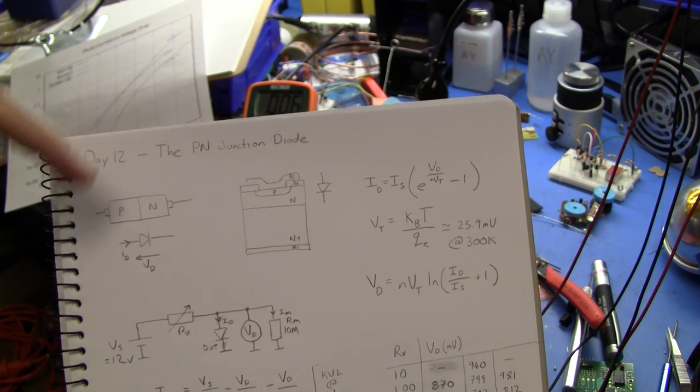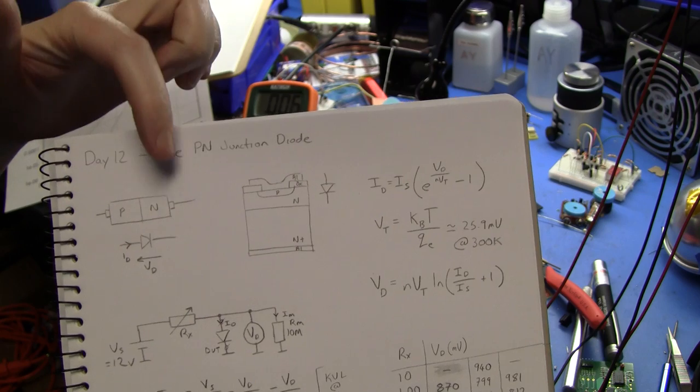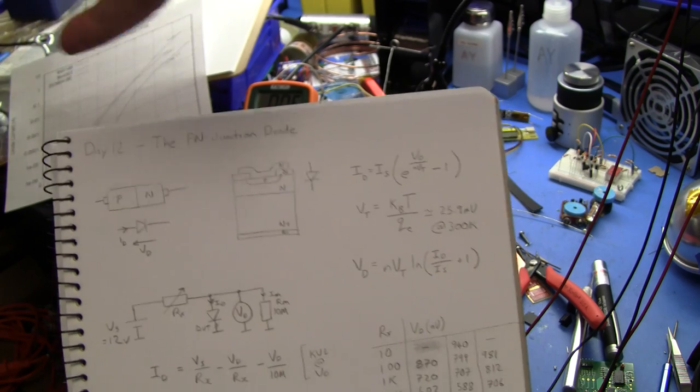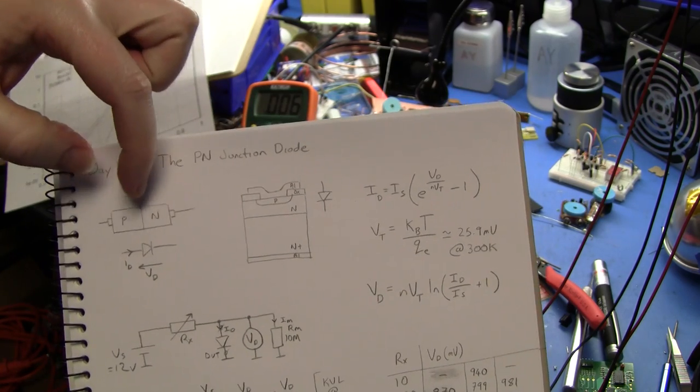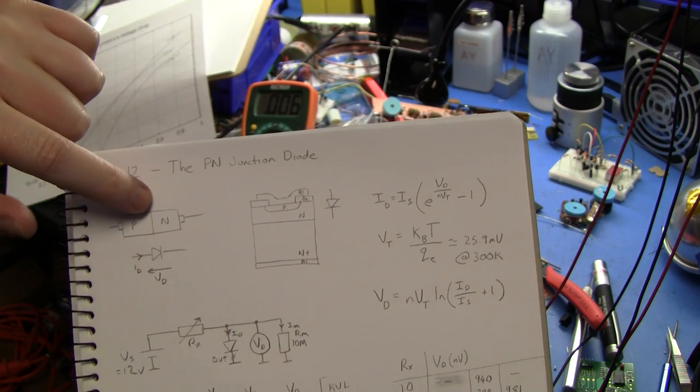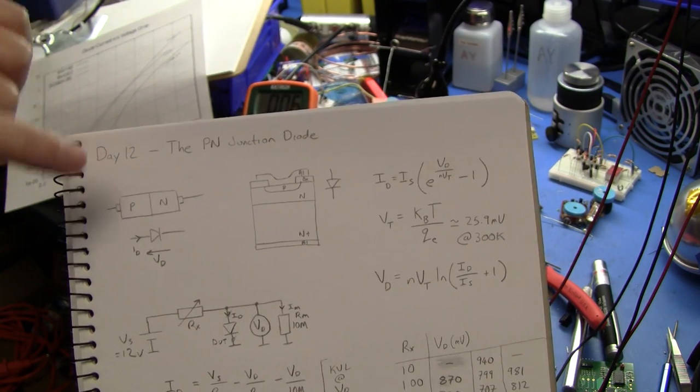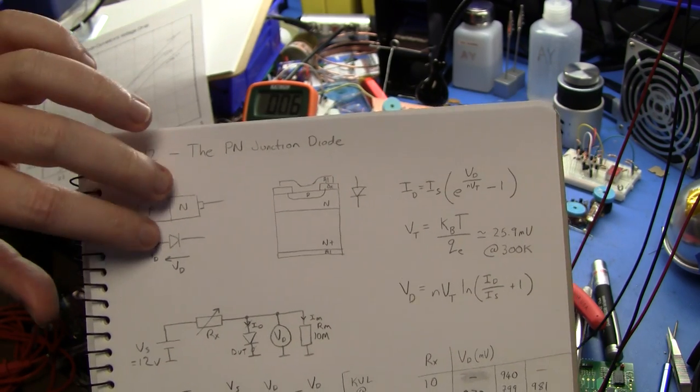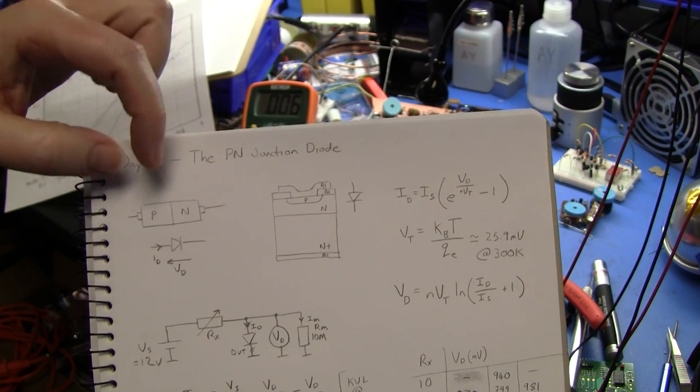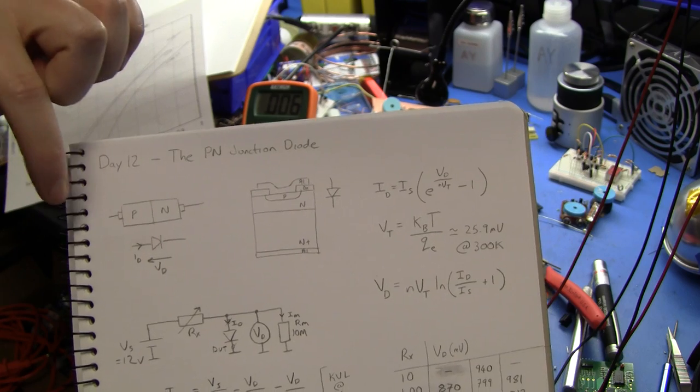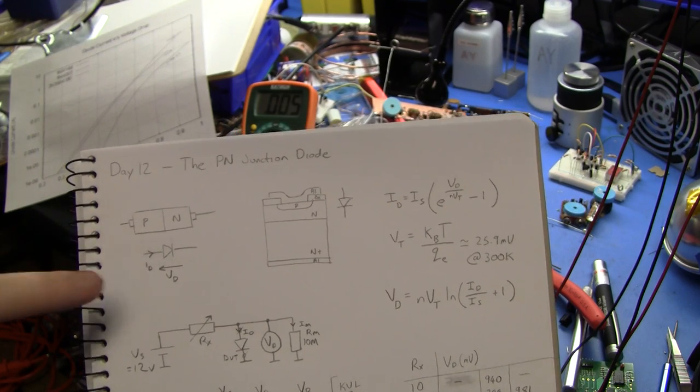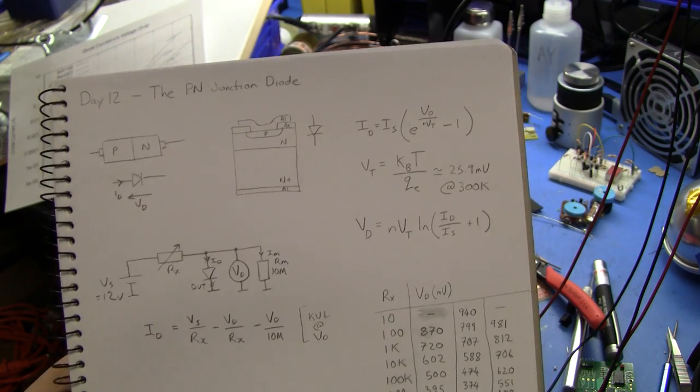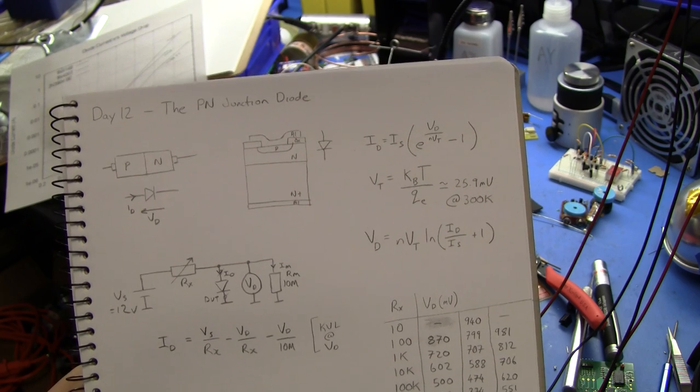When you apply a bias in the reverse direction, say you apply a positive field here and negative voltage this way, the positive charge will pull the electrons even further away from the depletion region. Similarly for holes, if there's a negative charge here the holes will be attracted away and it will become even more of an insulator until you eventually give any charge that happens to be spontaneously generated enough energy to cause avalanche breakdown. But we're going to assume you're operating the diode within its reverse breakdown voltage.